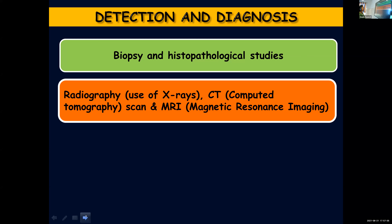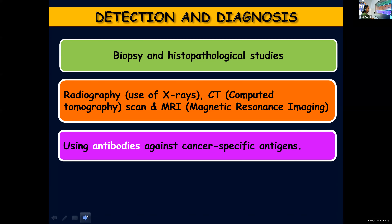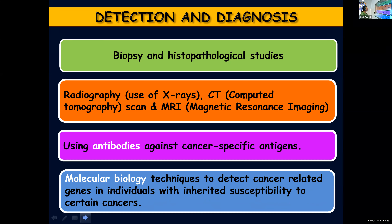The second method is radiography, using X-rays and scans. CT scan stands for computed tomography scan, and MRI stands for magnetic resonance imaging. These will give a better idea about any tumor formed in the body — how far the growth has proceeded and which parts are affected. The next method is using antibodies against cancer-specific antigens.